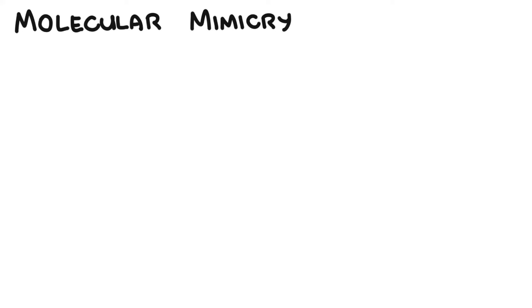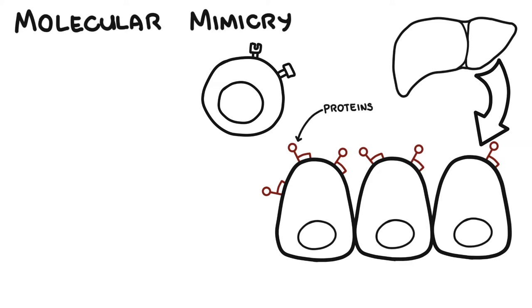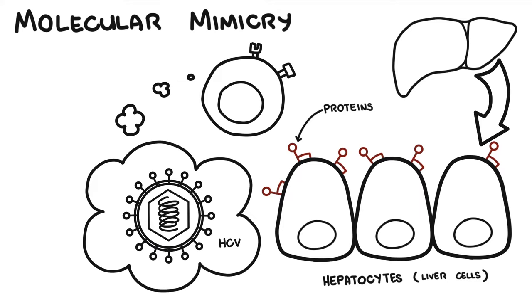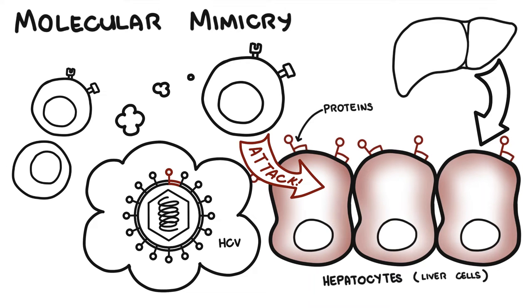The precise cause of autoimmune hepatitis is not known, but there are a few theories. The first is molecular mimicry. Some people's immune systems may mistakenly target proteins in their own liver cells, known as hepatocytes. This can happen because these proteins on the liver resemble proteins found in microorganisms such as a virus — for example, the hepatitis C virus. The immune cell is meant to attack the hepatitis C virus but mistakes the liver cells for it due to the similar protein structure, resulting in inflammation of the liver.